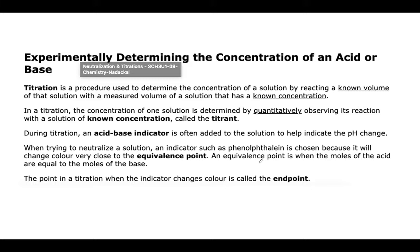When you're trying to neutralize a solution, an indicator such as phenolphthalein — a specific indicator used in titrations — is chosen because it will change color very close to the equivalence point. The equivalence point is when the moles of the acid are equal to the moles of the base. When you reach that equivalence point, you will see the indicator change the color of the solution. The point in a titration when the indicator changes color is called the end point.